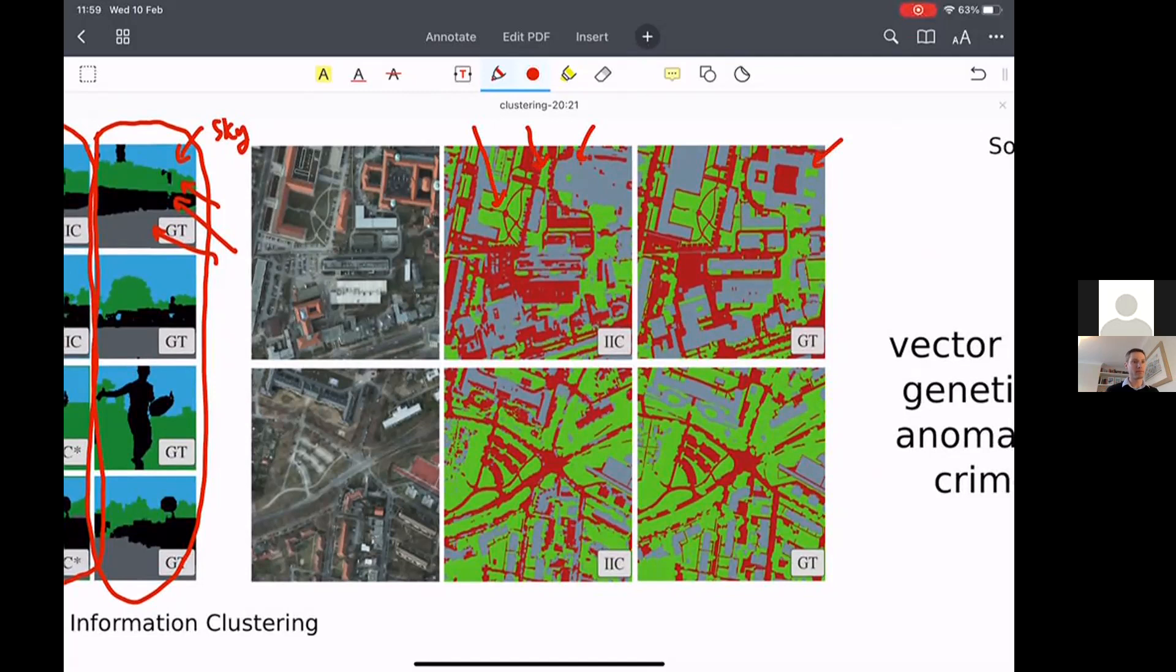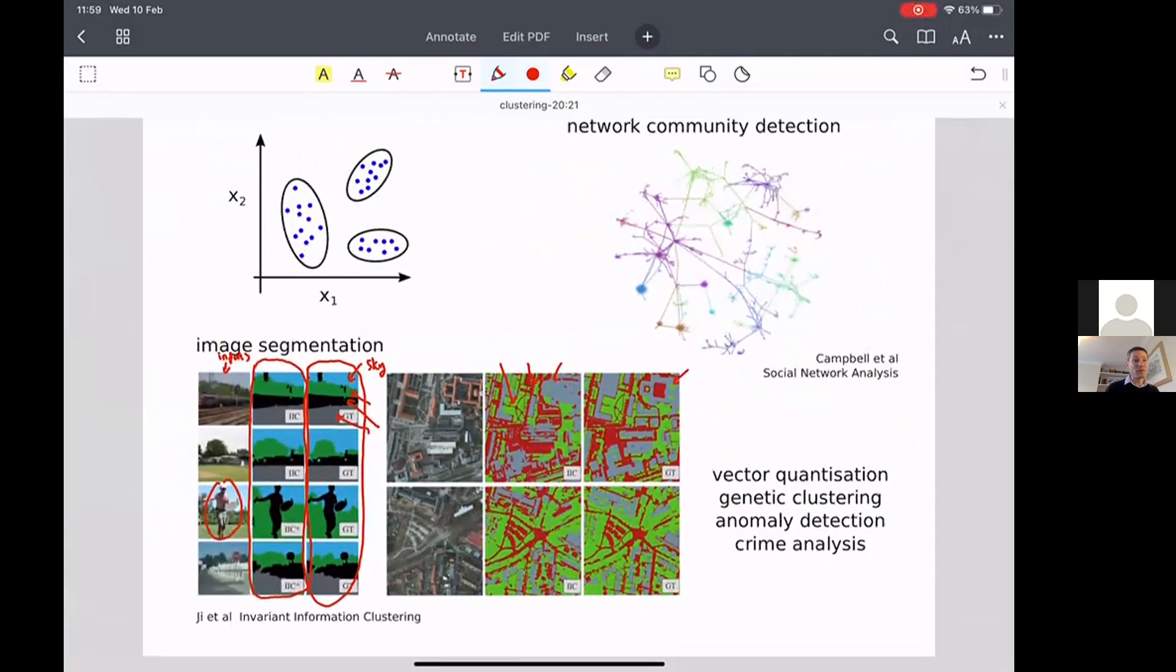And so this sort of thing can then get fed into say environmental research to ascertain how land use in particular areas has changed over time and what the consequences that might be for the environment. So images is one example of where clustering is used in image segmentation.